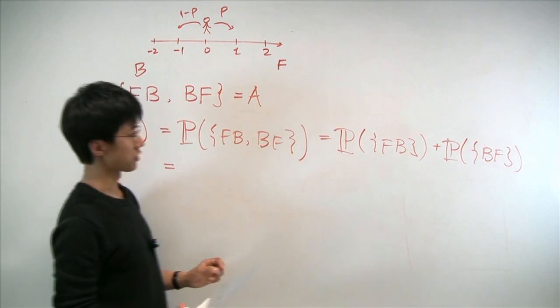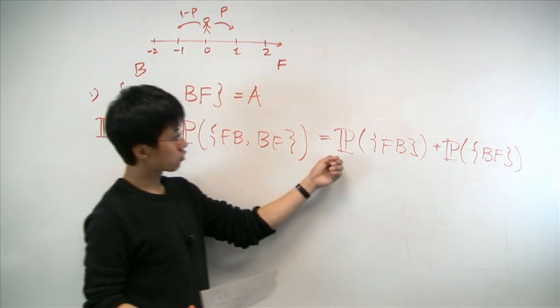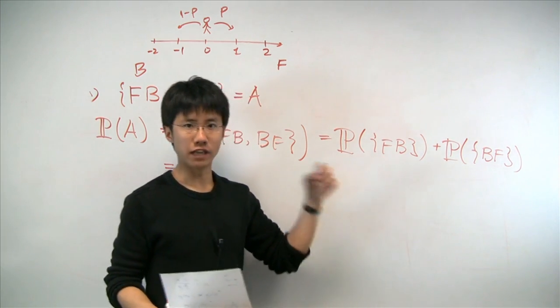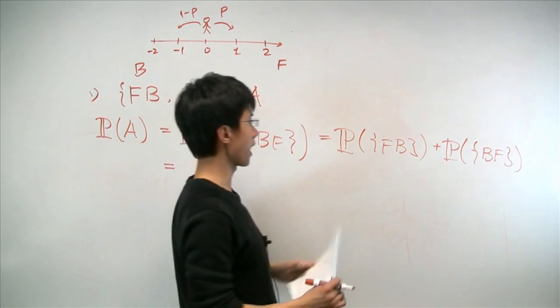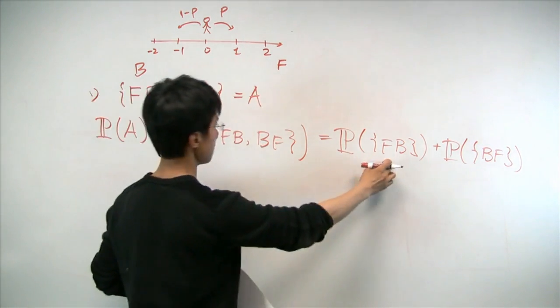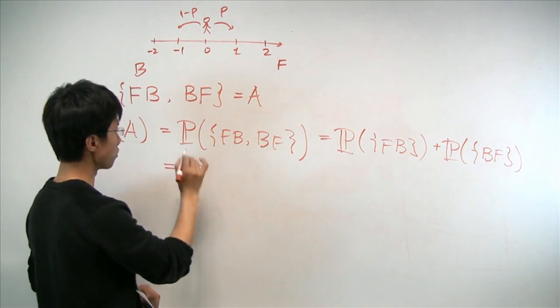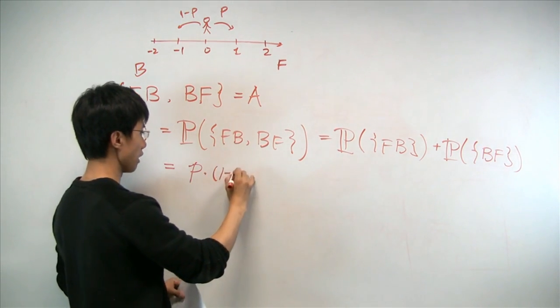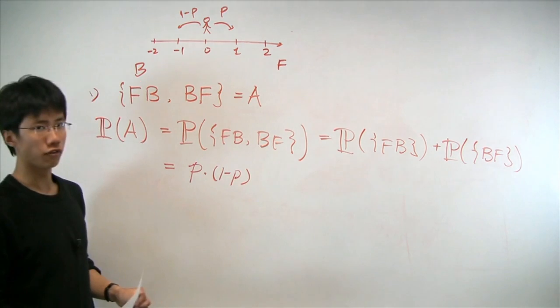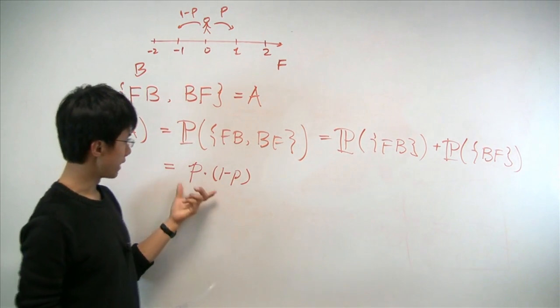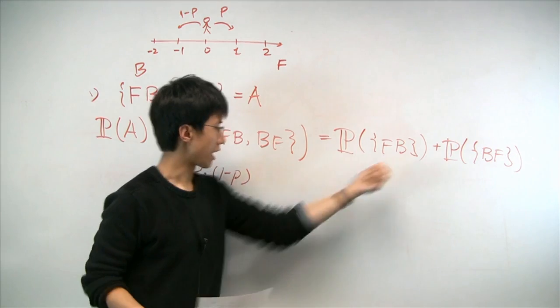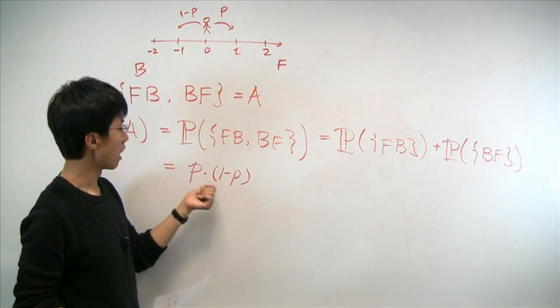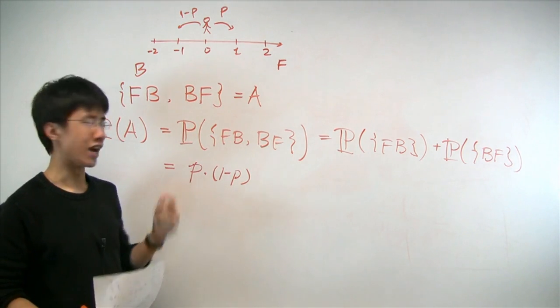Here's where the independence will come in. When we try to compute the probability of going forward and backward, because the action in each step is completely independent from the past, we know this is the same as saying, in the first step, we have probability p of going forward. In the next step, probability 1 minus p of going backwards. We can do so, namely writing the probability of forward-backward as a product of going forward times the probability of going backwards, because these two actions are independent.